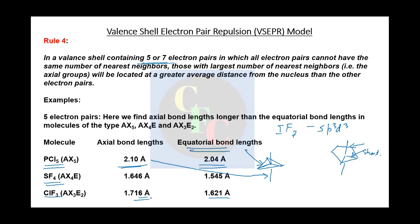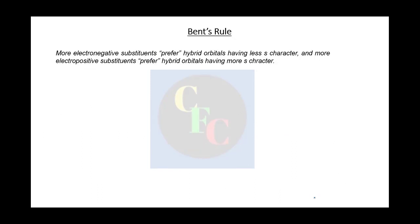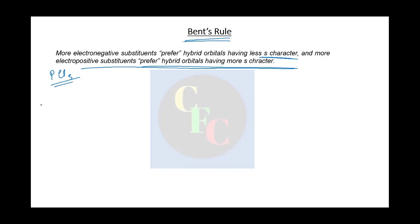This also applies to SF4 and ClF3 with the same sp3d hybridization — equatorial bonds are shorter than axial bonds. This happens because equatorial bonds have more s character, and more s character means more electronegativity, so the bond pulls electrons more toward itself. This is explained by Bent's rule.